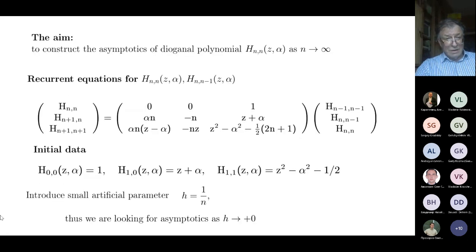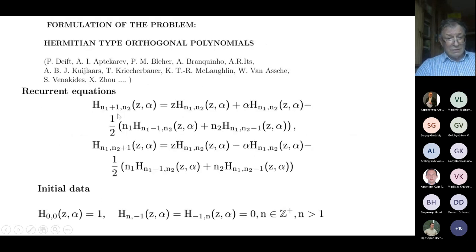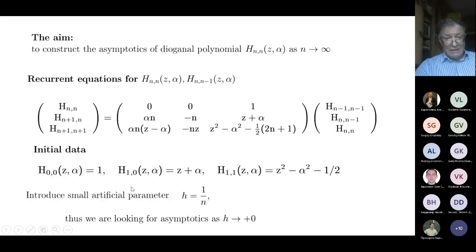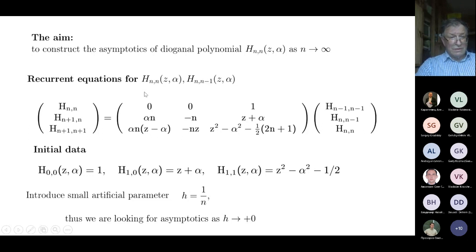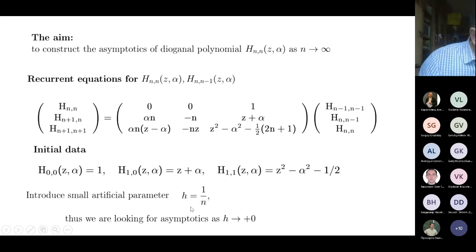Our goal is to construct asymptotics for big n — meaning n1 and n2. We haven't yet solved this problem based on the recurrent equation for the two-dimensional orthogonal polynomials. We considered the situation when n1 equals n2, but it has some new ideas and approaches. In the case when n1 equals n2, we can reduce our original equation to a system of equations, and if we introduce a small parameter h, the asymptotic we want to construct means h tends to zero.